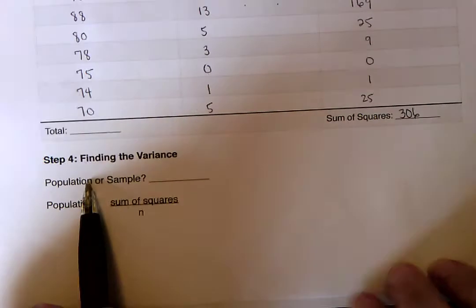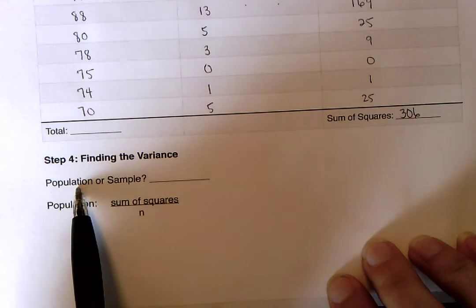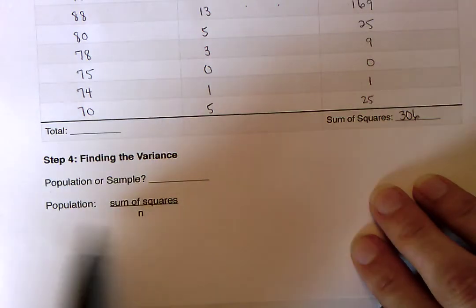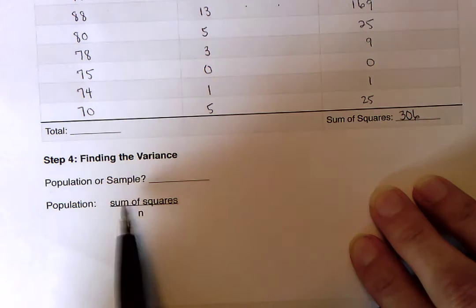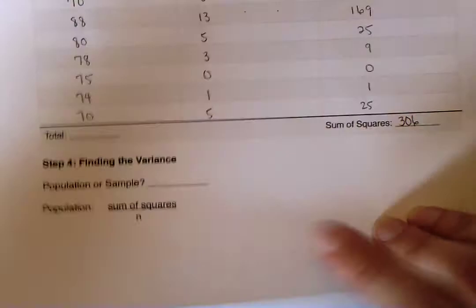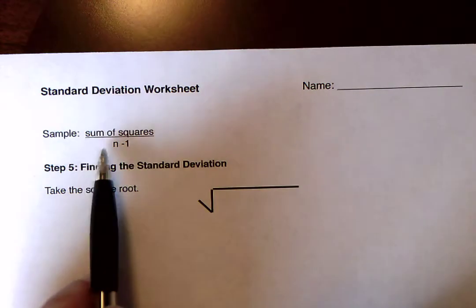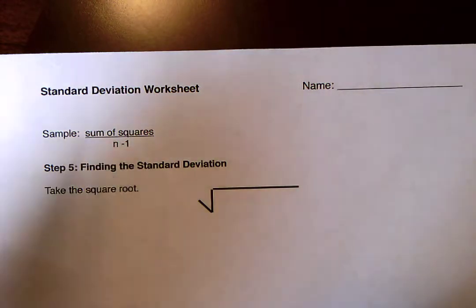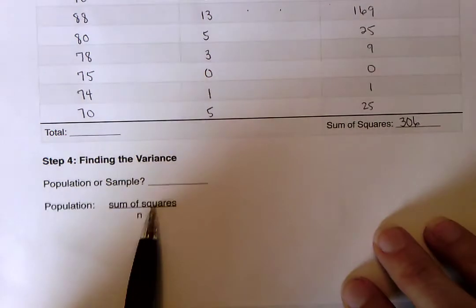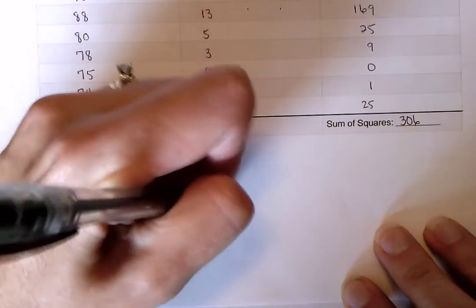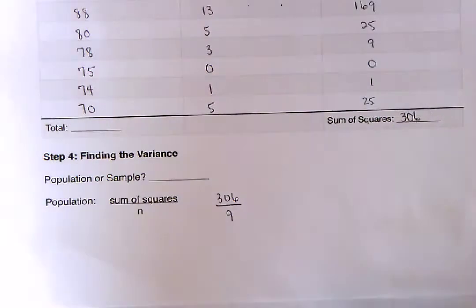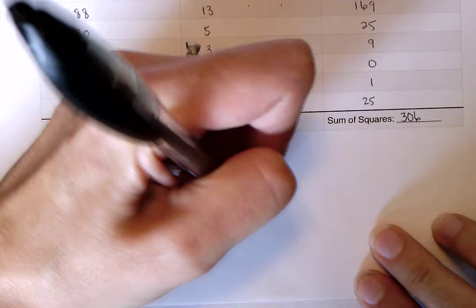This set of data represents a population, maybe like an entire class or something. Alright, so for our first case, we're going to consider population. So you're going to write, when you do your worksheet, you're going to put here, for finding the variance, you're going to say whether it's a population or the sample. And what you're going to do is you're going to follow the instructions on here. So for a population, you would take that total, 306, the sum of the squares, and divide it by how many numbers you have. Remember, we have nine numbers.